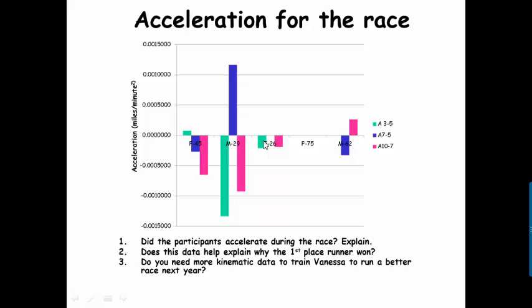Female 26 had some slowing down, but not as erratic, if you will, as the male 29. This female 75, she was consistent the entire way, so no acceleration changes. And the male 62 slowed down, and then at the end said, whoop, I'm going to catch up.